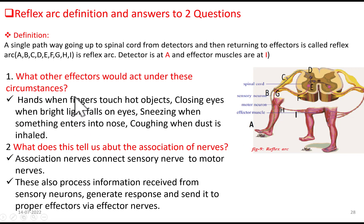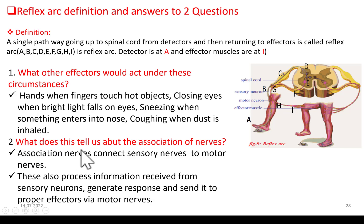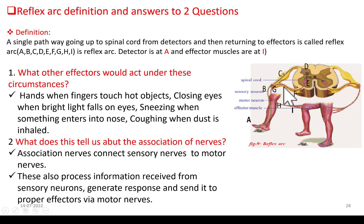Question two: what does this tell us about association neurons? Association neurons connect the sensory neurons with the motor neurons. They process the information received from sensory neurons, generate a response, and send commands to the effectors via motor neurons. We have answered both questions, and this finishes the reflex arc. In this video we have covered reflex arc and knee jerk reflex.